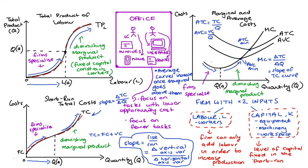So that's our cost curves derived from the total product of labor curve. To explain the link, we just need to focus on specialization and diminishing marginal product. I hope the video helped — if it did, please like and subscribe. Thanks to the viewer who suggested this video, and I hope you're all keeping safe and well.